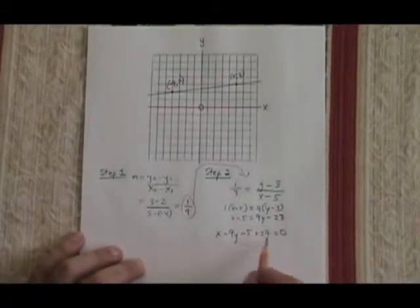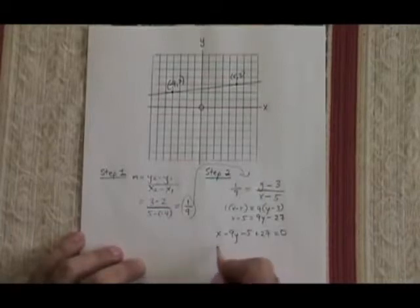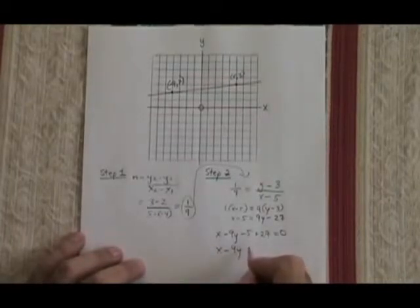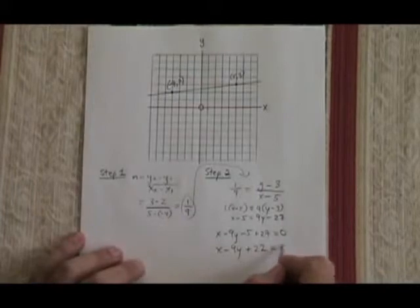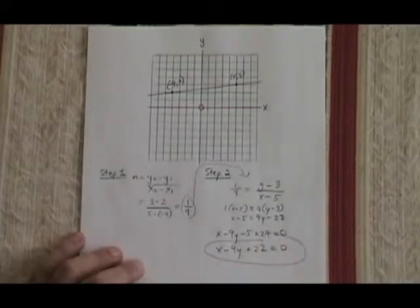Simplifying, all I have left to do is combine these two constant terms. So I have x minus 9y plus 22 equals 0. This is the answer. It is a valid form, ax plus by plus c equals 0, and it gives the equation for this line.